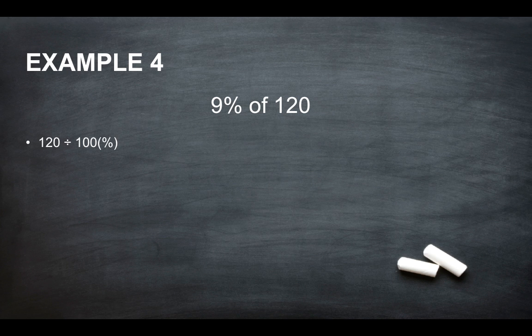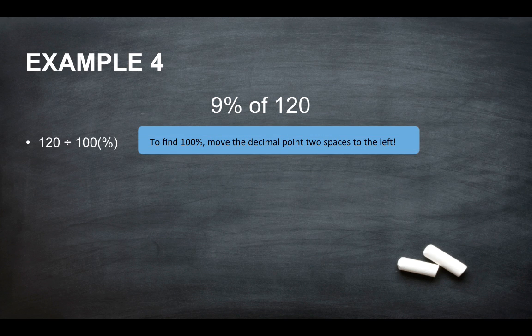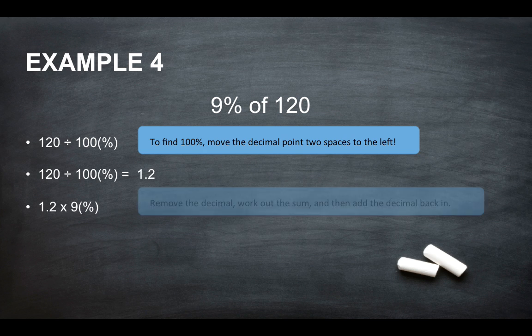Finally, we've got our last example. So we've got 9% of 120. So 120 divided by 100%. Move the decimal point two spaces to the left. So we've got 1.2. And 1.2 times 9.